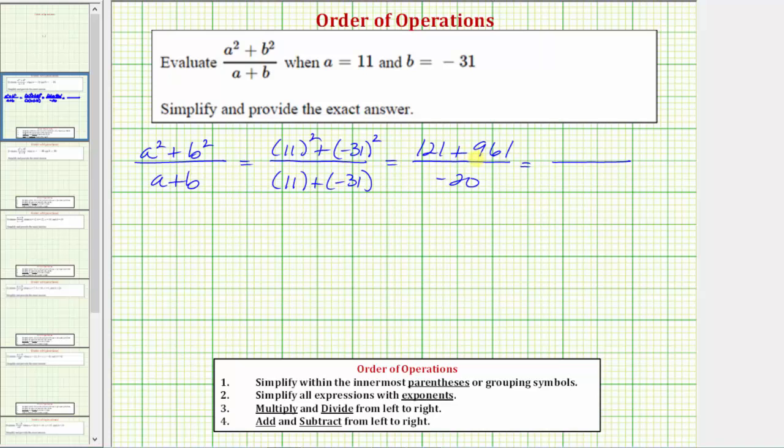And 121 plus 961 is equal to 1082. So we have 1082 over negative 20, or 1082 divided by negative 20. Because this quotient is negative, we can write this as negative, and then 1082 divided by 20.